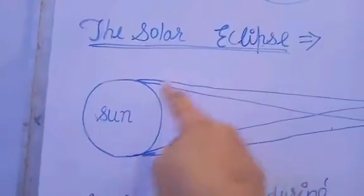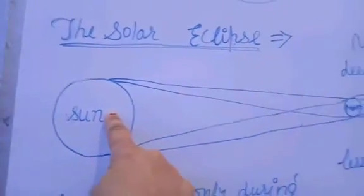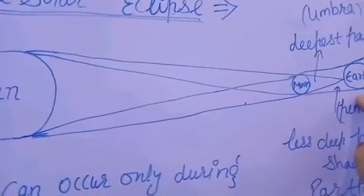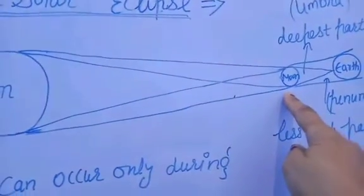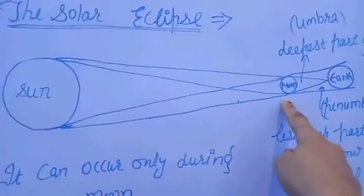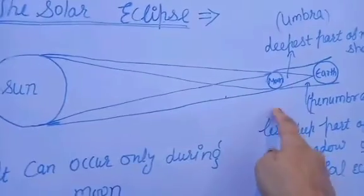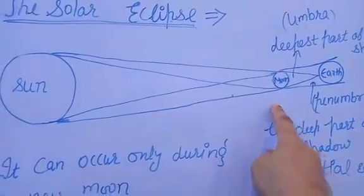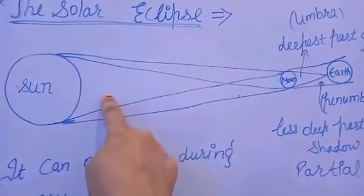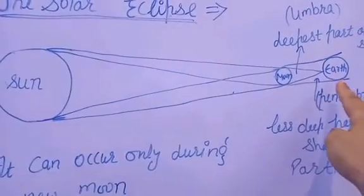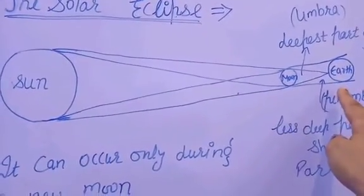The solar eclipse occurs when the moon comes between the sun and the earth. So the definition of solar eclipse is: when the moon occurs between the sun and the earth, solar eclipse occurs.